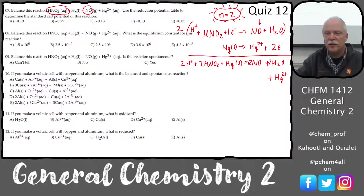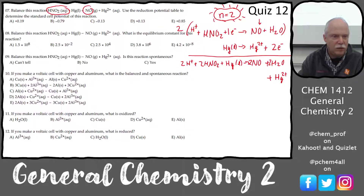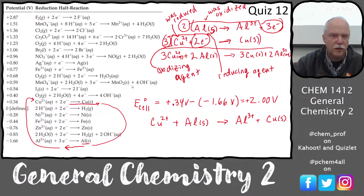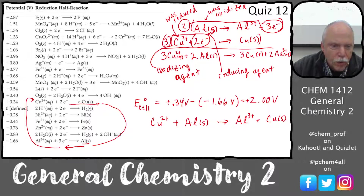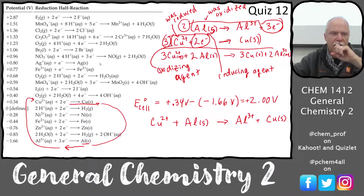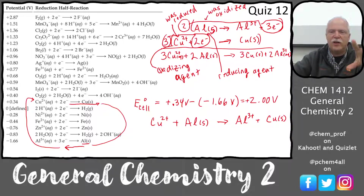Going to the redox table to find the potentials — it's in the one attached to the homework, not in the PowerPoint. What's the potential for the top half reaction? It's a reduction, so you don't need to flip it.